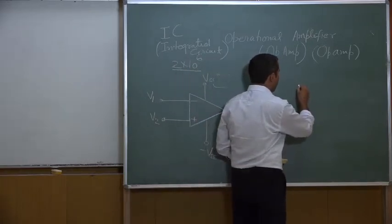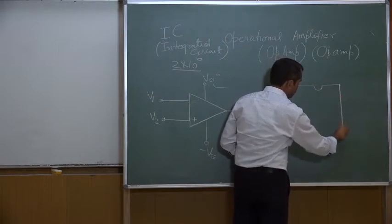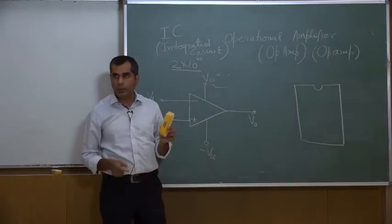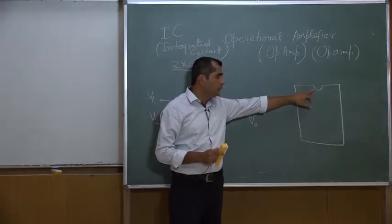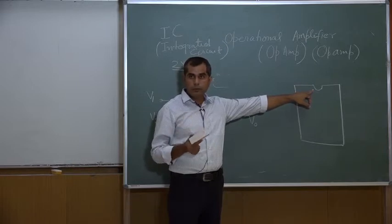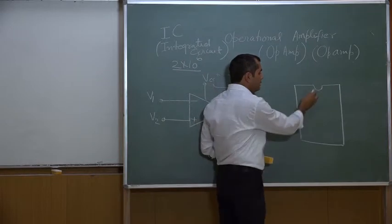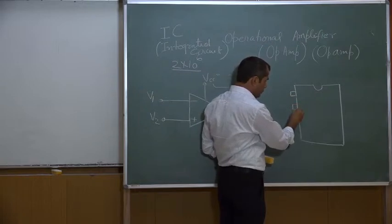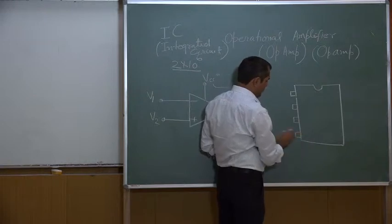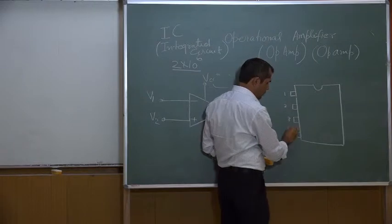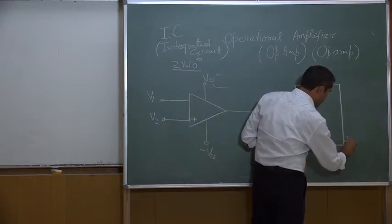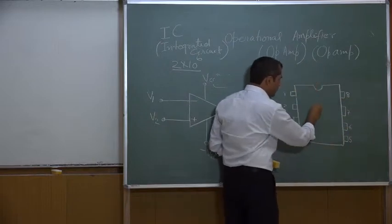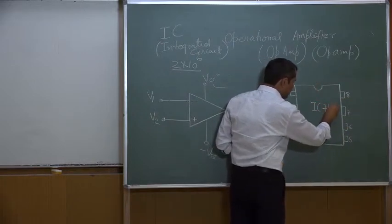If I draw the top view of IC741, there will be a cut mark on top to indicate where to start counting. Starting from the cut mark, you will see four pins on the left — 1, 2, 3, and 4 — and four pins on the other side — 5, 6, 7, and 8. This is the pin diagram for IC741.